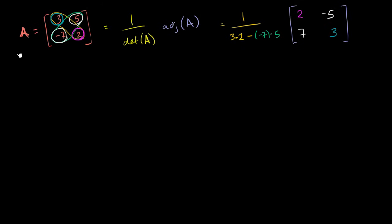So we are left with, this is going to be equal to 1 over, 3 times 2 is 6, negative 7 times 5 is negative 35. But then we have this positive over here. So this whole thing becomes plus 35. So 6 plus 35 is 41. So the determinant of our matrix is 41.